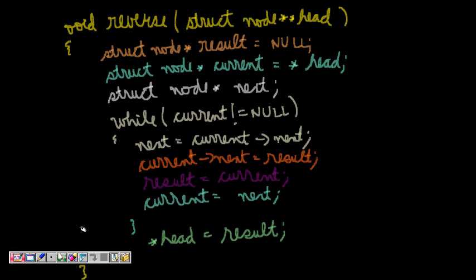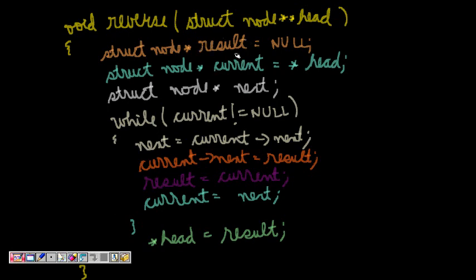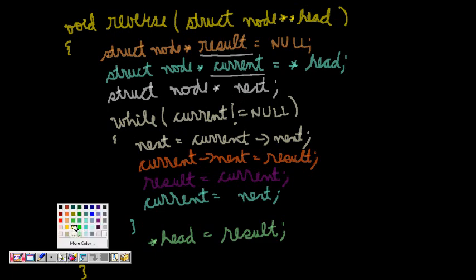Let's look at the code. What we were doing is maintaining three pointers: one is 'current' — where the present node is; then a 'next' pointer; and a third called 'result'. Let's trace through a linked list example for ourselves.